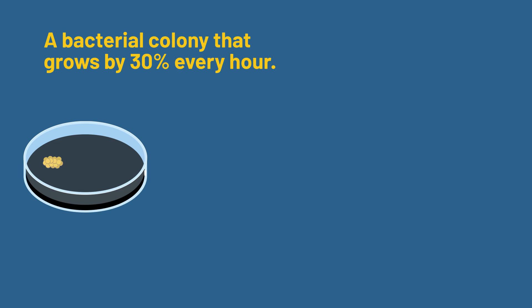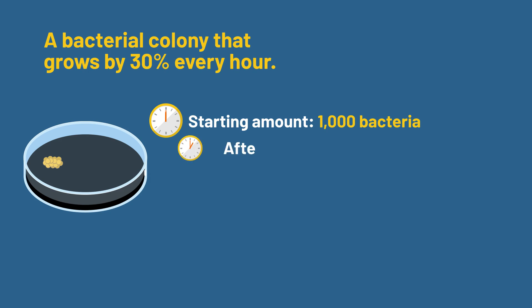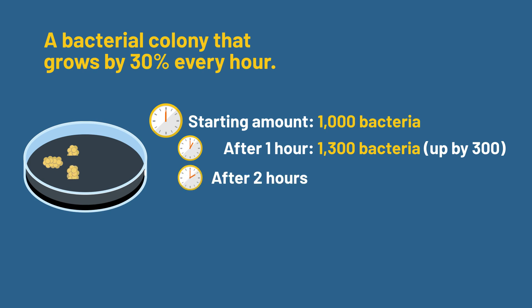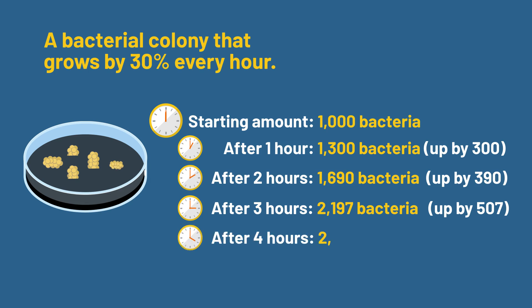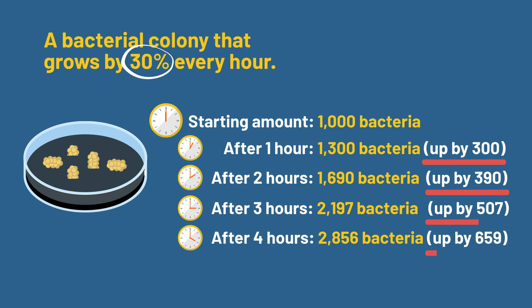Let's break down what happens. Starting amount: 1,000 bacteria. After one hour: 1,300 bacteria. After two hours: 1,690 bacteria. After three hours: 2,197 bacteria. After four hours: 2,856 bacteria. Notice something interesting? Even though the growth rate stays at 30%, the actual number of new bacteria gets larger each time. That's because each generation builds on the one before it.